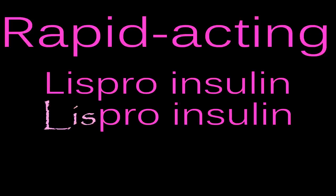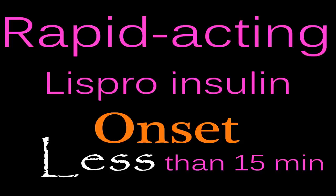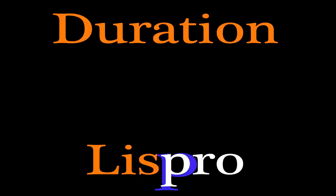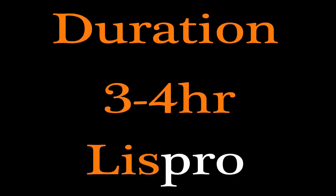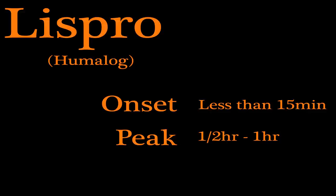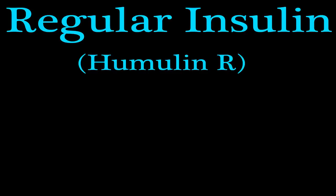For the onset, look at the word Lispro — 'less pro,' less than 15 minutes for the onset. Take the capital L in Lispro and turn it to an angle; it becomes a half sign, so the peak is half an hour to one hour. The P-R-O in Lispro is three letters, so the duration is three to four hours.